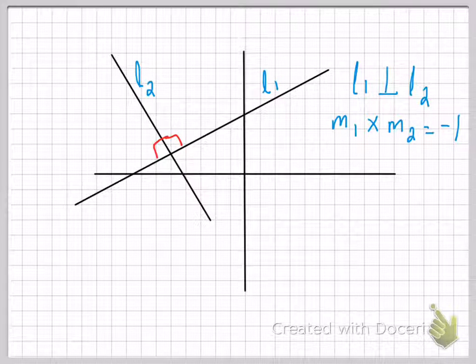Let's do an example quickly. Let's say L1 has a slope of three and I want you to figure out the slope of L2. What you're going to use is basically this equation right here: M1 times M2 equals minus one.